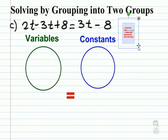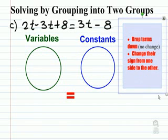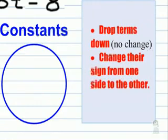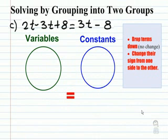The main concept involves the following. You want to drop the items into each one of the circles. All the variables go on the left, all the constants, the pure numbers go on the right.